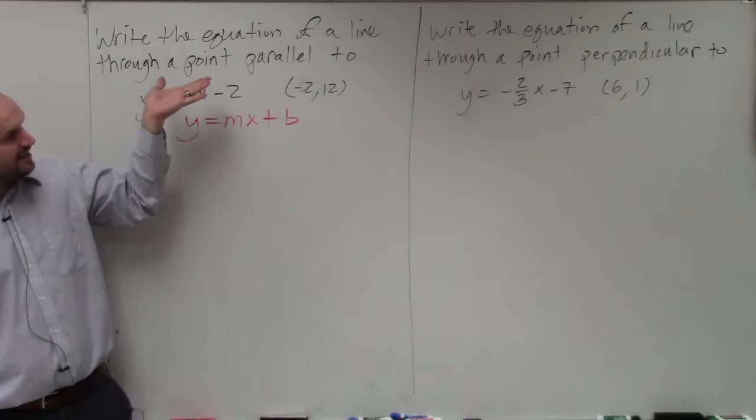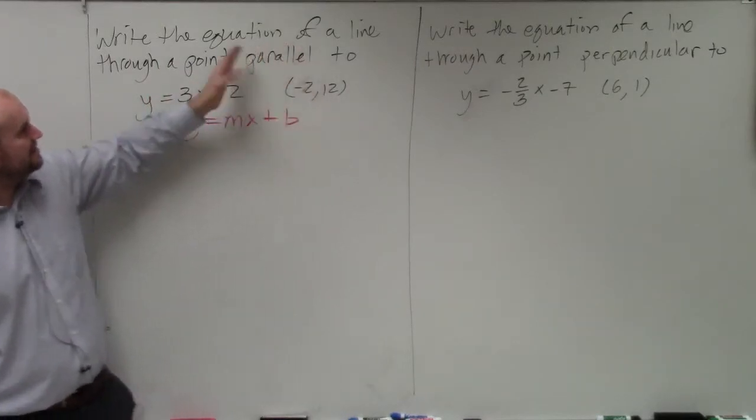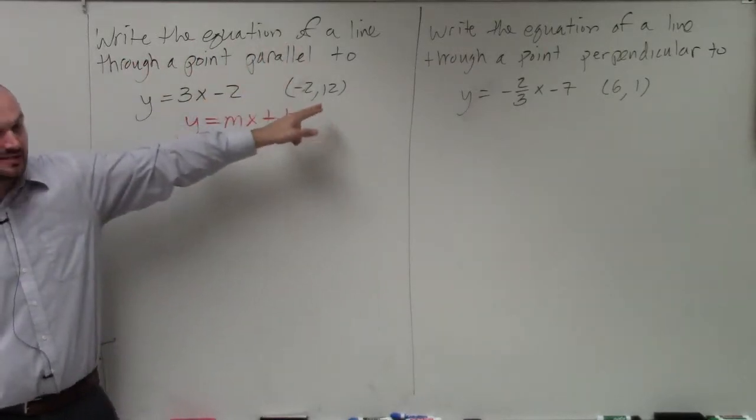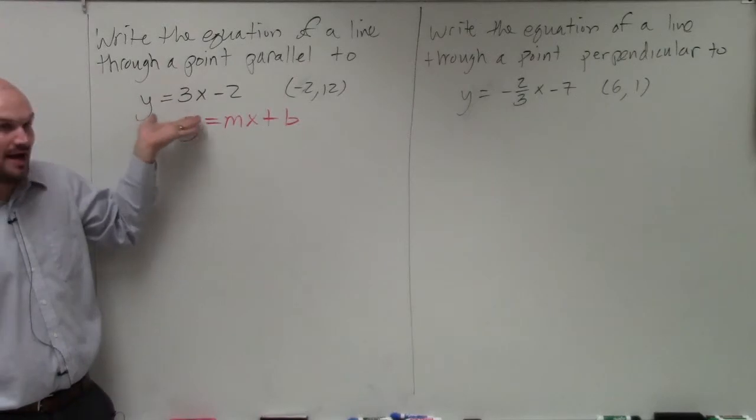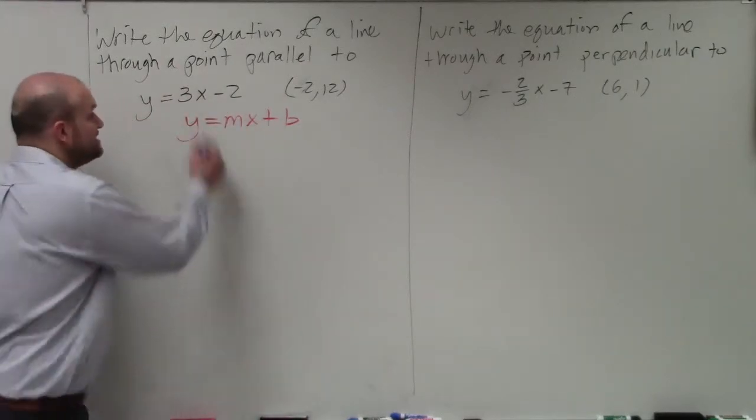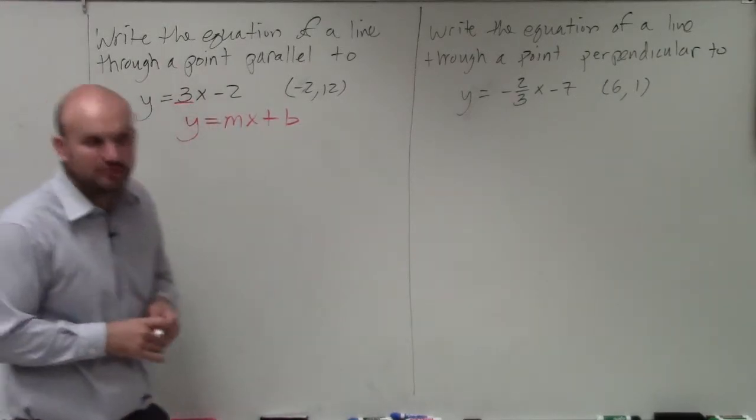So the information they give us is we want to write the equation of the line through a point, which they give us, and then that's parallel to y equals 3x minus 2. Now, in this equation, we know that the slope is 3.